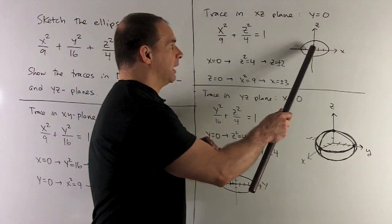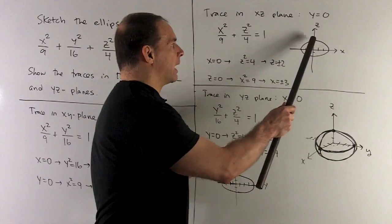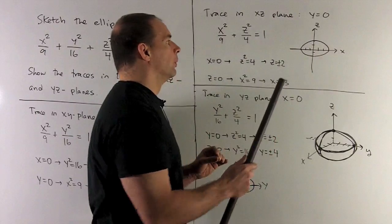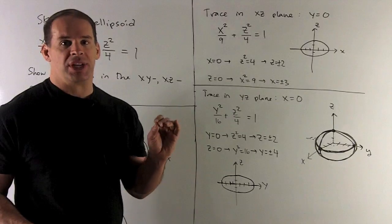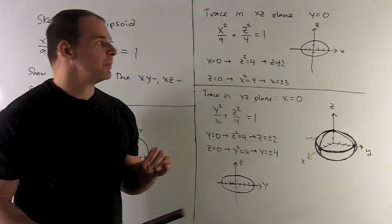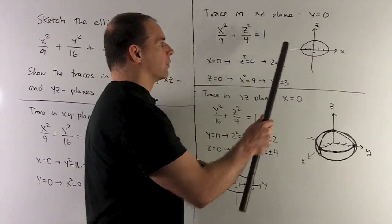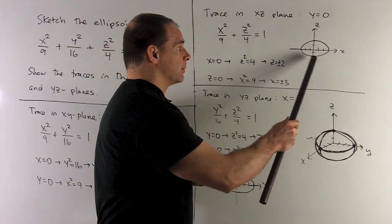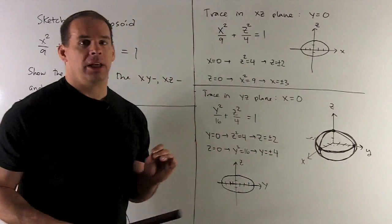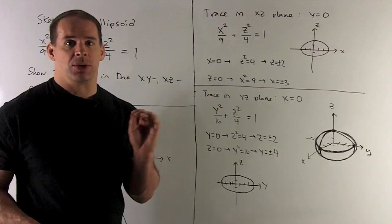So x equal to zero is going to be the z-axis. I go up by 2, I go down by 2. I let z be equal to zero, I get x² equals 9, x equals plus minus 3. So we go over 3 and then back 3, connect the dots, we get another ellipse. Finally, third trace, x equals zero, the yz plane.